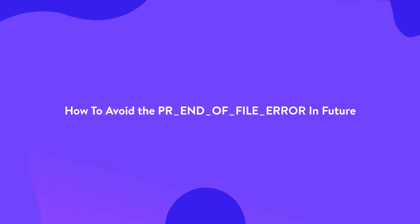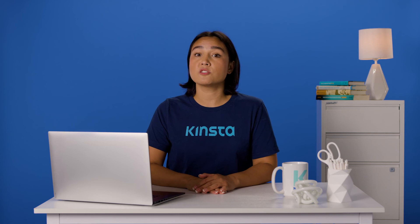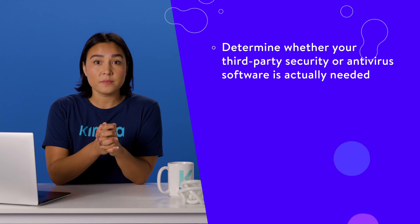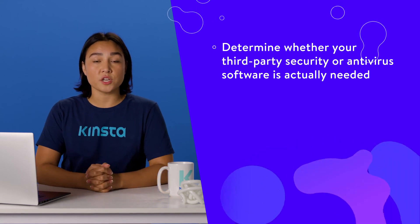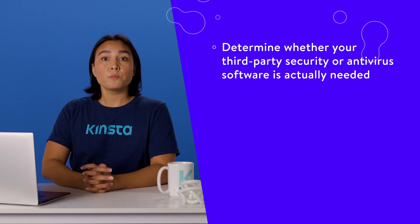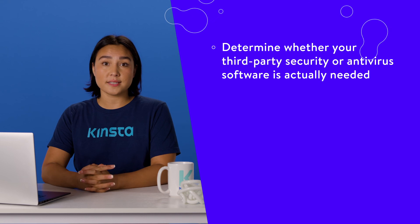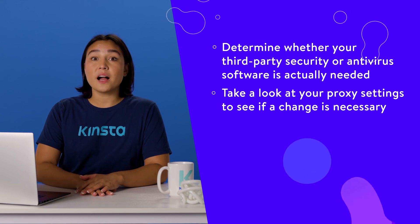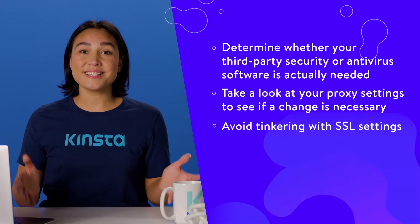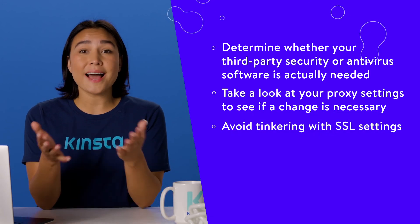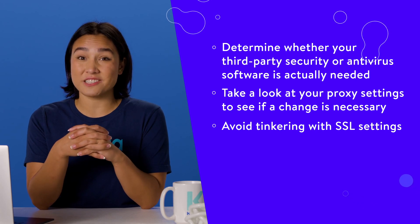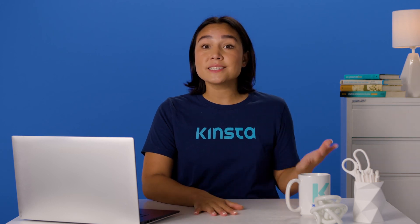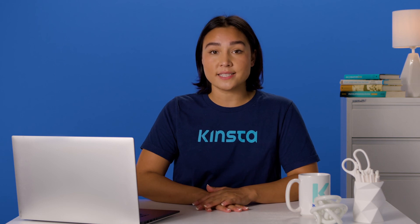In the future, you'll want to make sure the PR end-of-file error won't return. To do this, consider the following: determine whether your third-party security or antivirus software is actually needed, and whether you need a new solution or settings that won't cause the error again. You might also want to check your VPN solution and take a look at your proxy settings. Your SSL settings are often set in an optimal way, so tinkering with them if you're not an expert could spell disaster. It could be that you'll see the PR end-of-file error again regardless of your preventative measures, so having the knowledge on hand is going to serve you well alongside taking precautions.